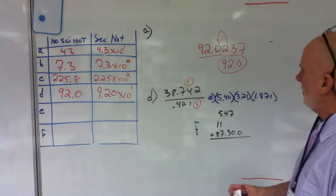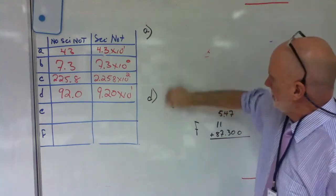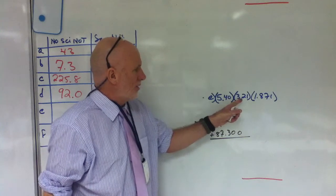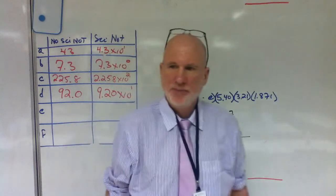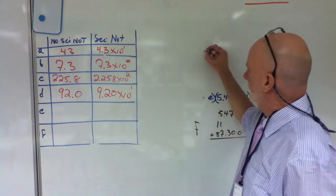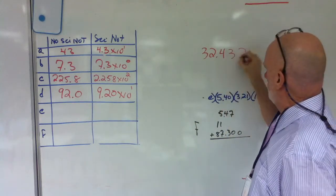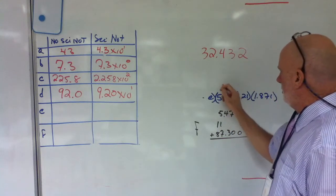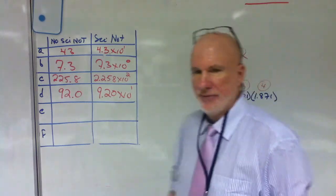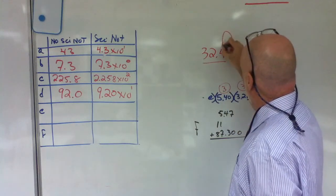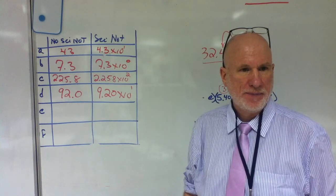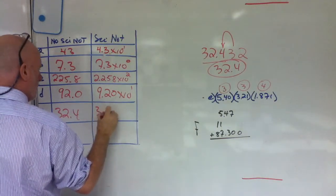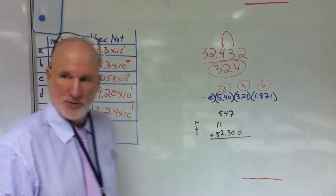Excellent. I can erase that one now. E, I have 5.40 times 3.21 times 1.871. What's that going to equal? Give me the whole math there, Muhammad. 32.432. Is everybody agreed with that? Verifications? Excellent. So I have 3 here, 3 here, 4 here. So what do I have in my answer? 3. So that does the changing. What do I have? 32.4. 3.24 times 10 to the 1. Is that correct? So far, so good?